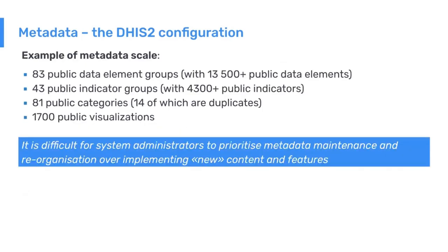To give an idea of the scale in national DHIS2 implementations, in a real national system we may find 10,000–15,000 data elements — the basic variables used for data collection — several thousand indicators used for analytics, dozens of categories representing disaggregations such as age and sex groups, and over a thousand public visualizations including charts and maps. This means every user has to sift through thousands of variables, which is often the result of poorly managed metadata with duplications and improper sharing settings.